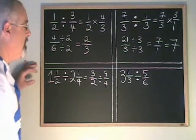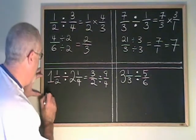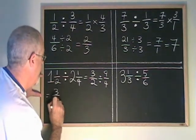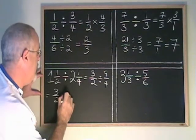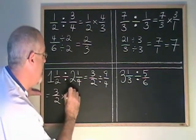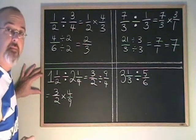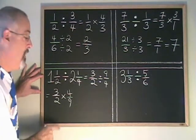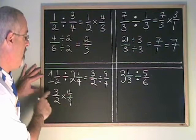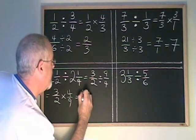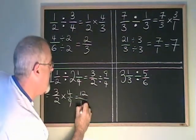It's time to turn the second fraction upside down. I multiply instead and 9 quarters turns into 4 ninths. And now again, I'm not cancelling. I'm going to do it straightforward. 3 times 4 is 12. 2 times 9 is 18.